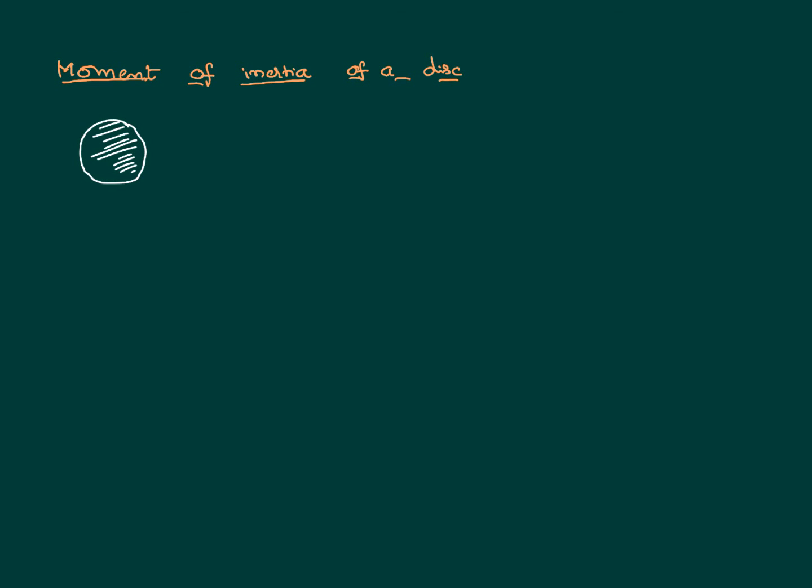Hello everyone. In this video we would like to find the moment of inertia of a disc about different axes. The basic difference between a ring and a disc is that a ring is a one-dimensional body where its entire mass is in the form of the length of a wire, whereas a disc is a two-dimensional body where the mass is spread over the entire surface area. Now let us imagine a ring of radius R and mass M.